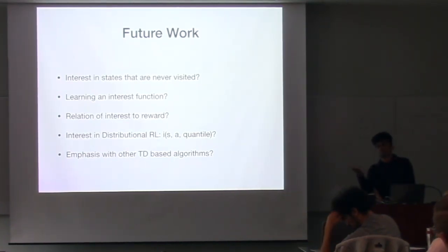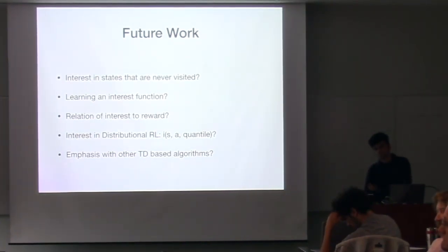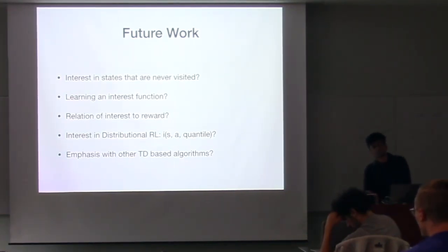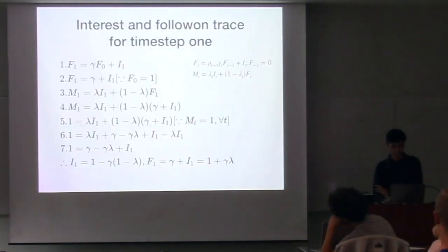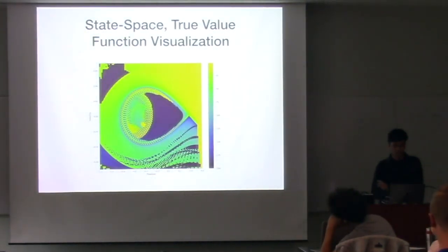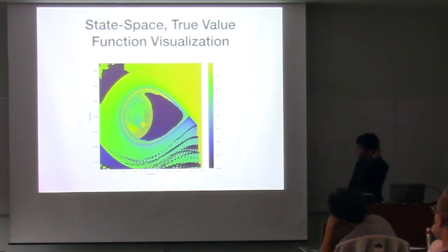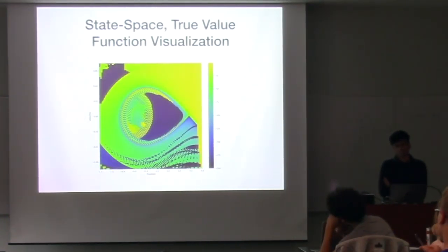Audience: For all of your experiments, you were talking about on-policy, right? So what do you think is on-policy? I also have a question about mountain car - could you go back to the slide where you show the true value with the bright orange? Is there a reason why there are so many high-frequency components in this plot, like blocks and dots and little bits?